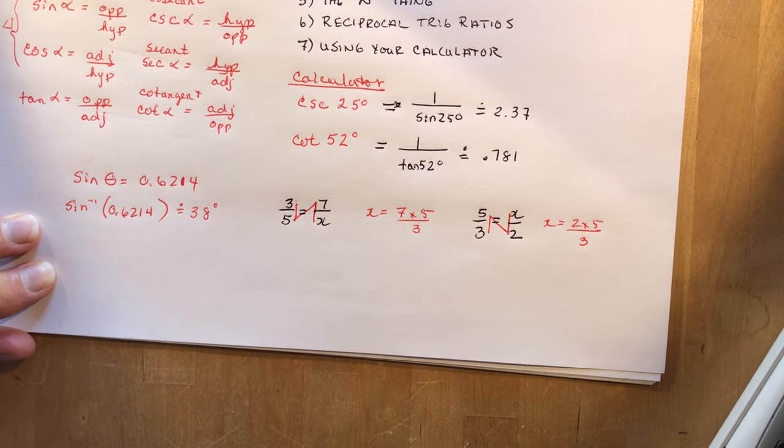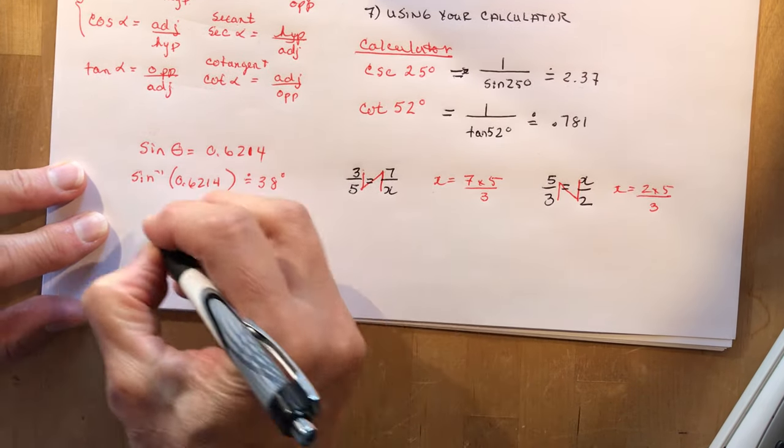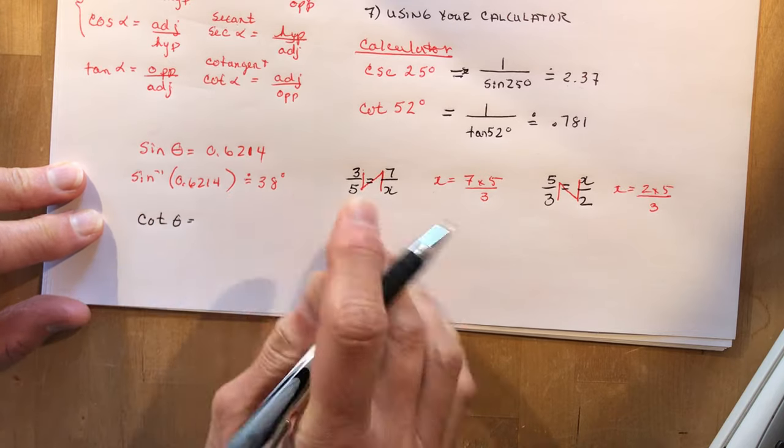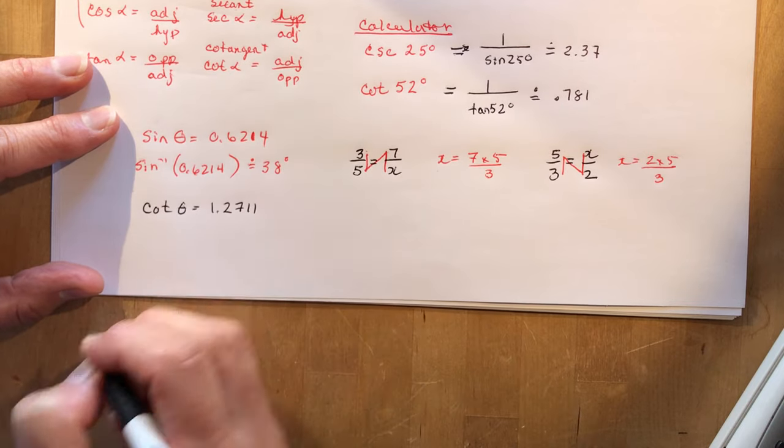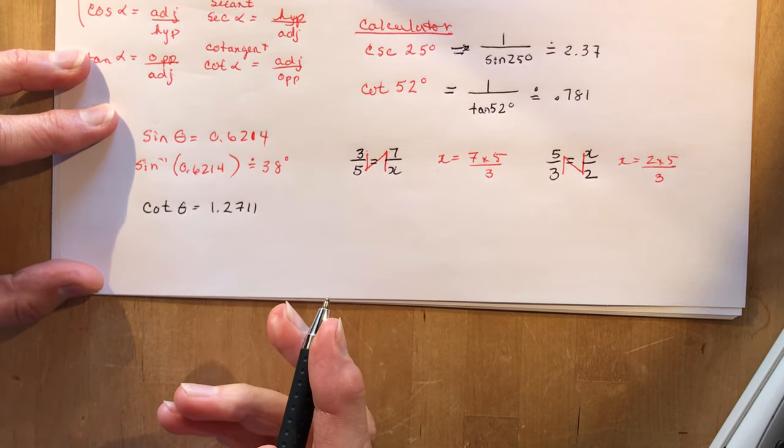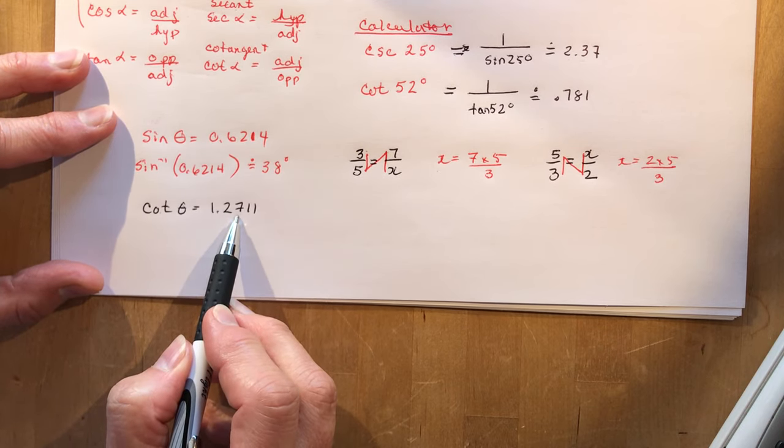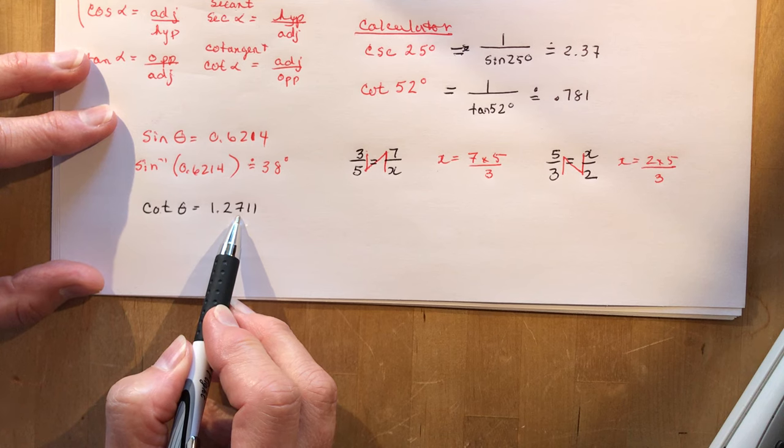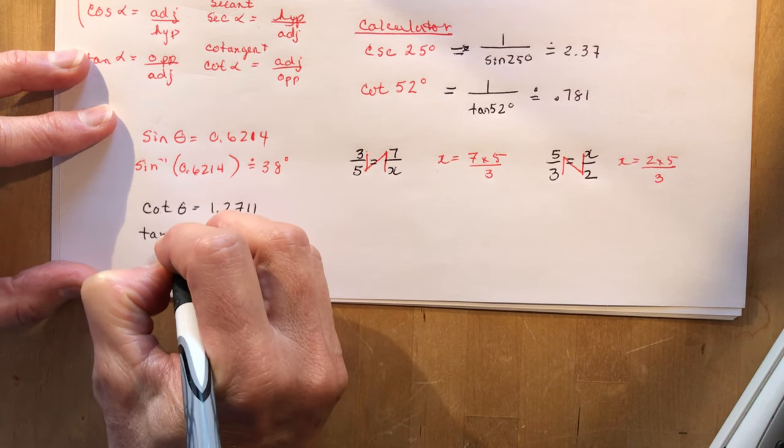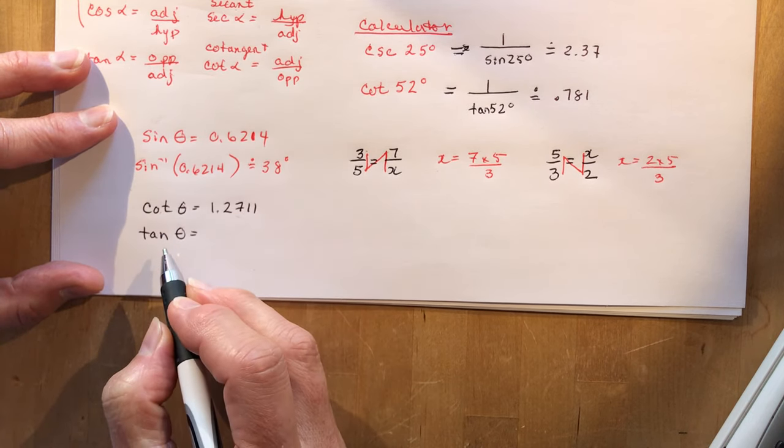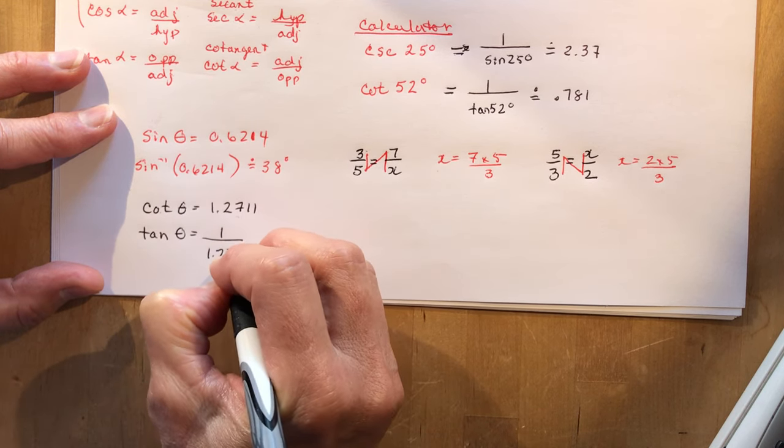Now I want to do one from your homework that's a little tricky. And it says, it says cotangent theta, cotangent theta equals 1.2711, and you have to solve for theta to the nearest degree. So remember that this is 1 over tangent, it's 1 over the tangent. So that means that the tangent, it's always easier to write it back into the principal or primary trig ratio, the tangent of theta is 1 over 1.2711.